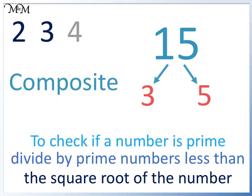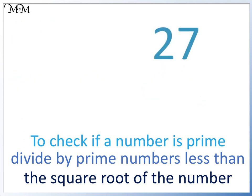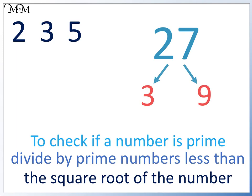A trick is that numbers in the 3 times table have digits which add to a number in the 3 times table. The 1 and 5 in 15 add to make 6, which is in the 3 times table. We will check 27. 27 is very close to 25, so we will look at prime numbers less than 5, because 5 fives are 25. 2 doesn't divide into 27 because it's odd. 3 does divide into 27 because 2 plus 7 equals 9, which is in the 3 times table. 3 times 9 equals 27, so it is composite.